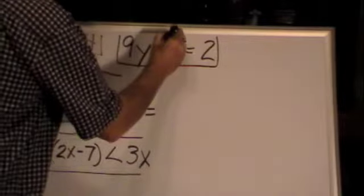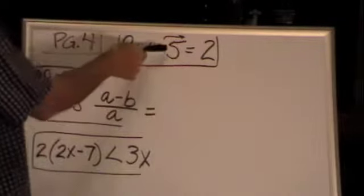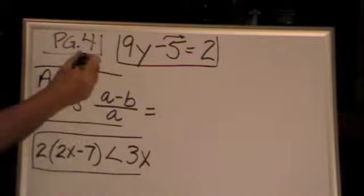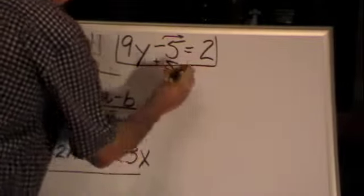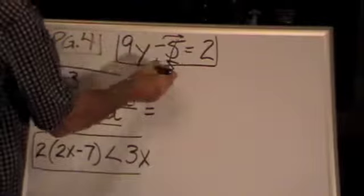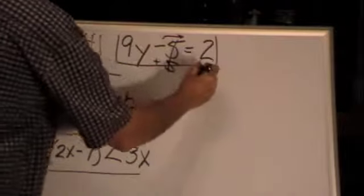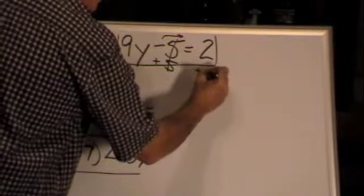Transposing. You want to move this here over there. How do you get rid of a negative 5? That's it, plus 5. What happens? They cancel, but you have to do the same thing on this side. Add 5.